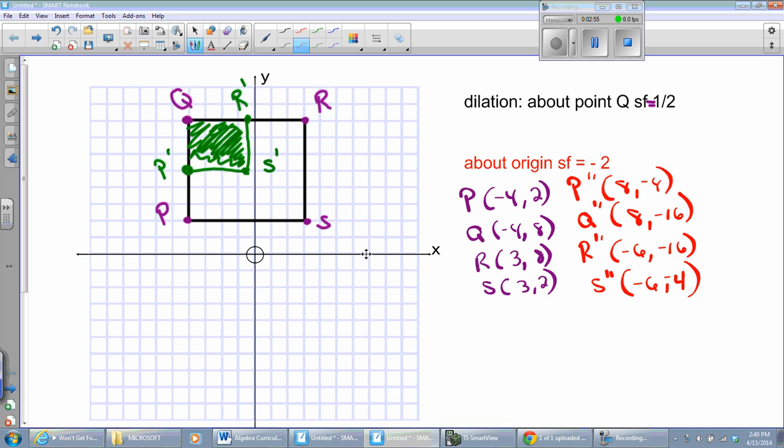All right, so, eight, negative four, eight, one, two, three, four. There's the new P. Now, what I want you to notice is P was in the lower left-hand corner. The new P will be in the upper right corner because the negative scale factor caused it to flip upside down. Okay, now,